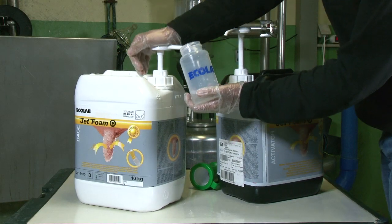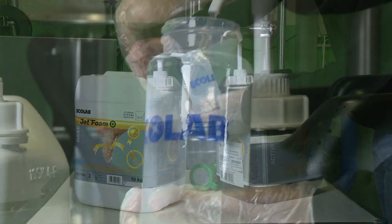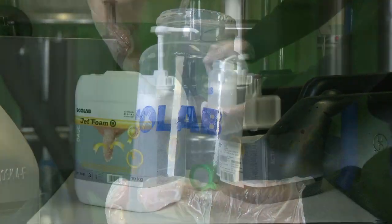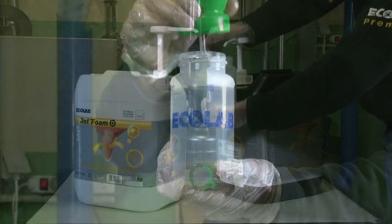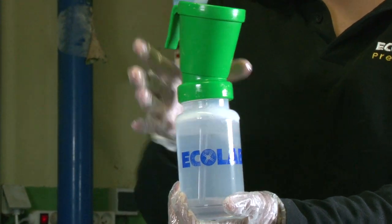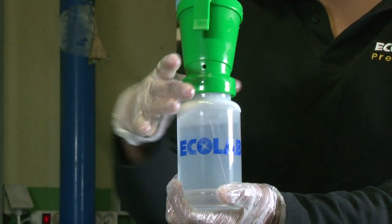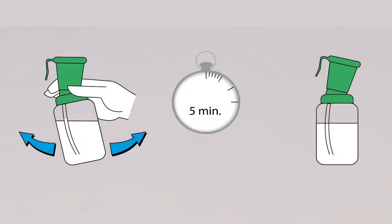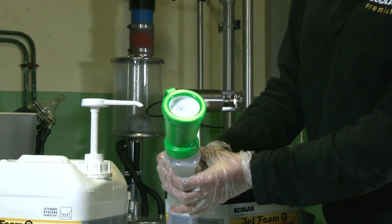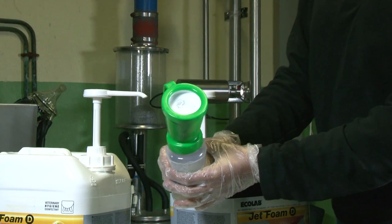The first action of Jet Foam is cleaning the teats. It is an active foam containing quality, unique features. Its moisture-retaining qualities promote all essential chemical reactions, and its adhesion qualities enable the product to adhere to the cow's teats, avoiding excess dripping and waste.